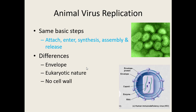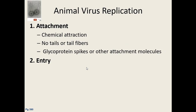The first step is still attachment. Viruses are attracted to our cells using chemicals — glycoprotein spikes or other attachment molecules. One difference is that viruses infecting animal cells don't have the tail or tail fibers — those structures that look like they should be landing on the moon. Those structures are specific to bacteriophages. Viruses infecting animal or human cells just use chemical attraction and specific glycoproteins for attachment.